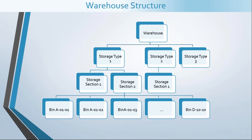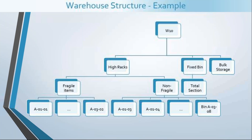Coming back to the warehouse structure we discussed earlier, now that we have covered all the examples, here is how it translates: at the top we have warehouse W01, which has three storage types — High Rack, Fixed Bins, and Bulk Storage. Within High Rack we have two sections: Fragile Items and Non-Fragile Items. As mentioned, one section is mandatory for every storage type, so Fixed Bin and Bulk Storage would have at least one section — let's call it Total Section. Finally, under these sections we create storage bins using meaningful names following a template.